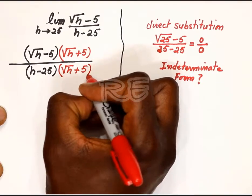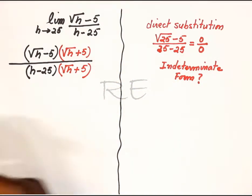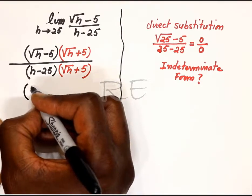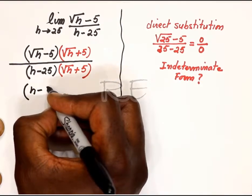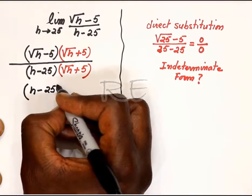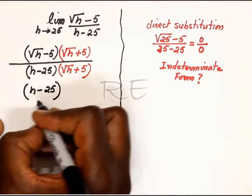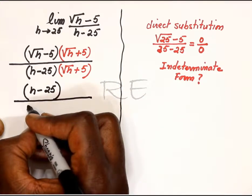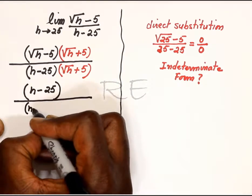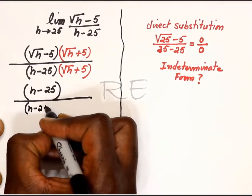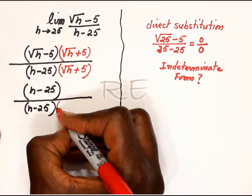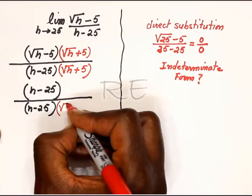So we multiply by square root of h plus 5. Here we go. We get square root of h squared, which is h, minus 5 squared, which is 25, and we leave the denominator as it is because we can cancel.